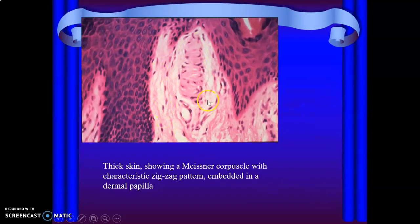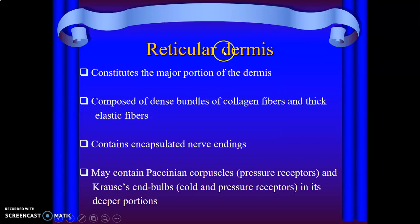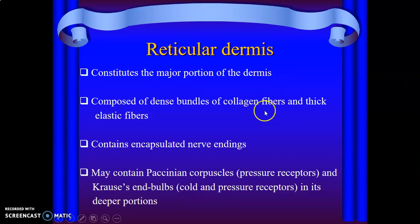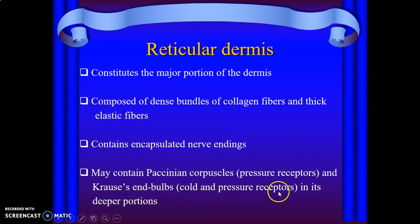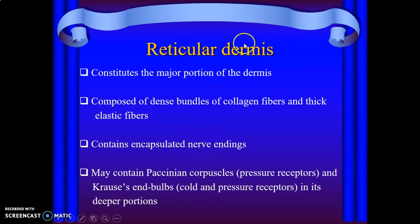Meissner's corpuscles are embedded within the dermal papilla. Reticular dermis is deeper to the papillary dermis and is the major portion of the dermis with collagen and elastic fibers and encapsulated nerve endings. Good examples are the Pacinian corpuscles — pressure receptors — and Krause corpuscles for cold. So the receptors of the skin: Merkel cells in the epidermis for touch, Meissner's corpuscles in the papillary dermis for fine touch, and Pacinian corpuscles in the reticular dermis for pressure.